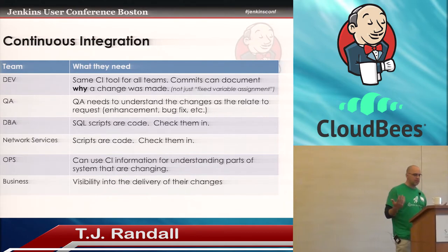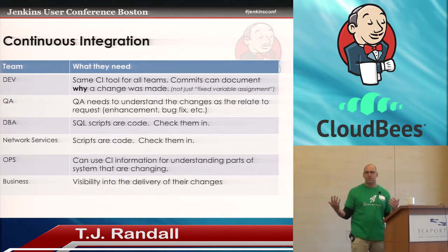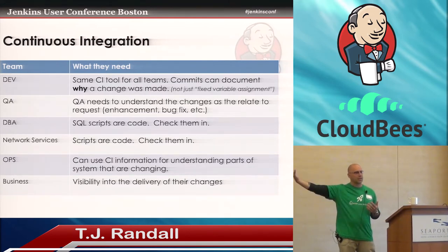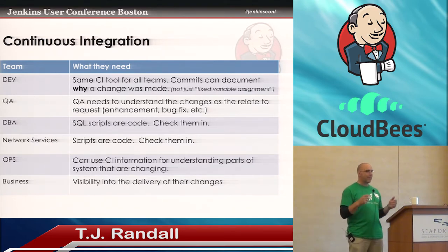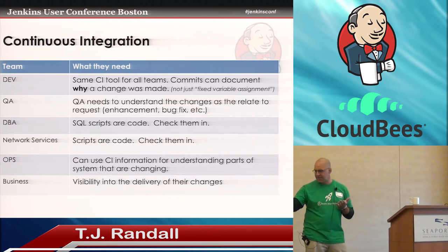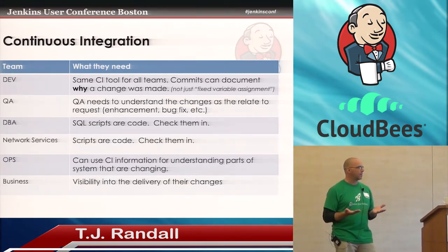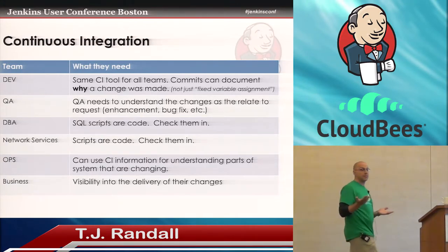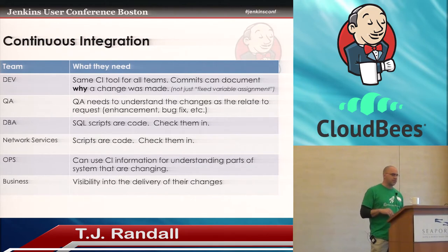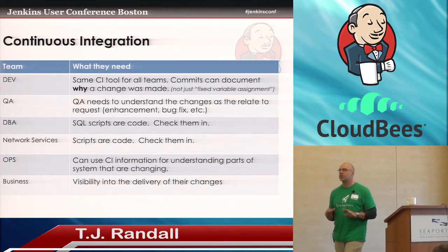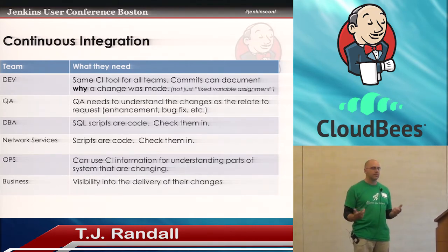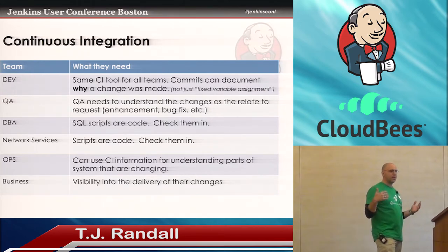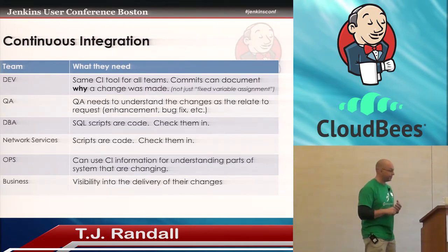For QA, they need to understand the changes as they relate to the request. QA is always in a dubious position—the business is hammering them for when it's going to be done, they're viewed as a bottleneck, and development is saying you're slowing me down. So QA is like, just give me the code. But they also have the task of saying, I know this change relates to what the business just asked for. How come your CI tool isn't helping them answer that question? That saves a lot of emails and phone calls. For DBA and network services—SQL scripts and scripts are code. Just check them in, version these things, make them part of your build and deployment process.